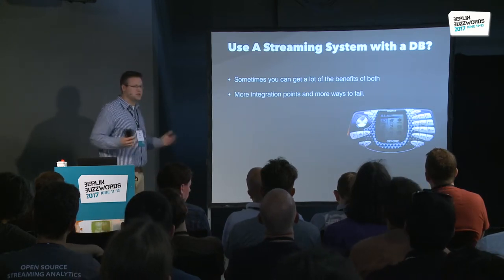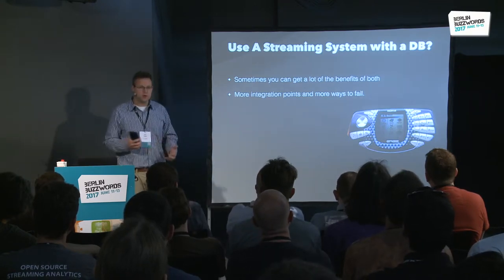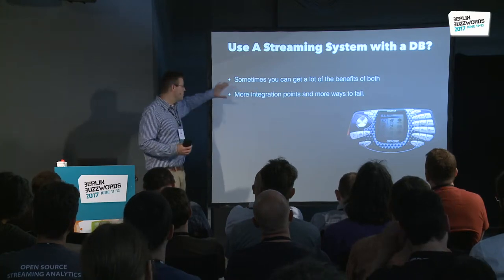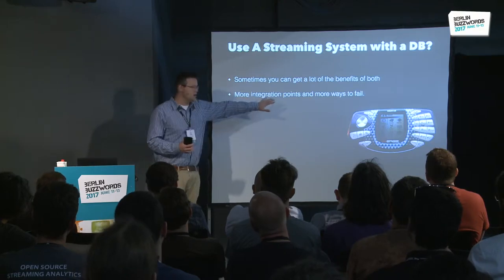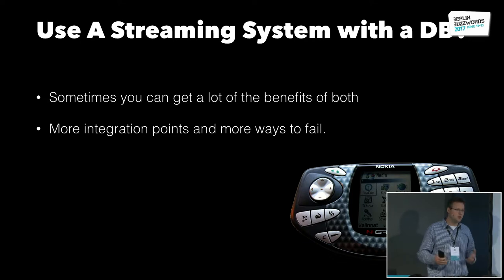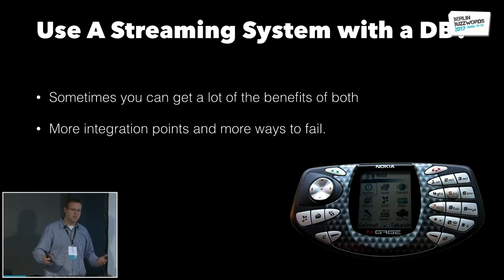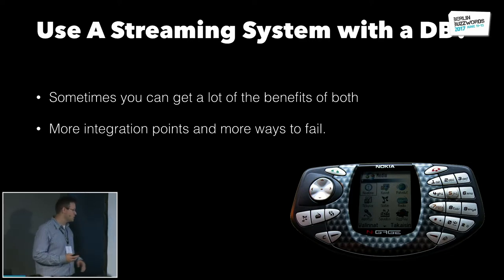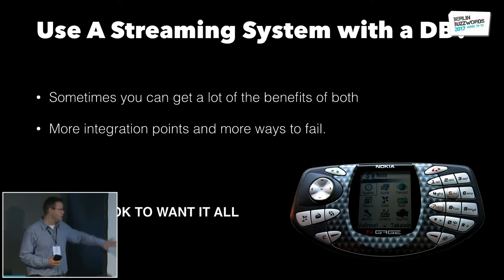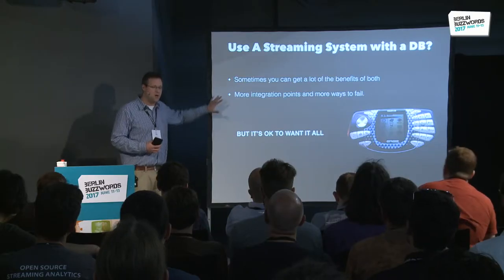Why can't I just use a streaming system and a DB together? You can, and lots of people do, and many have a lot of success. The big catch is that more integration points means more ways things can fail. The integration point between, say, Storm and Cassandra, or Storm and Redis, is one of the trickier things to get right. But you should want this — you should want the benefits of both. All the things on those past two slides — I want all of that in my operational apps. I don't want to have to choose.